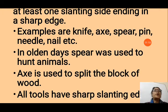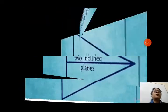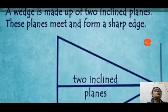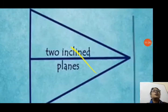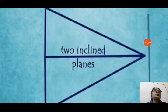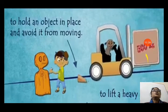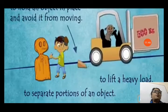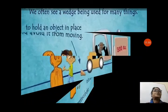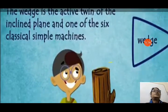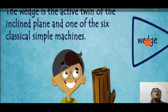In olden days, a spear was used to hunt animals. An axe is used to split a block of wood. All these tools have sharp slanting edges so they can cut objects. The wedge is made up of two inclined planes that meet and form a sharp edge. The wedge is the active twin of the inclined plane and one of the six classical simple machines.